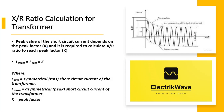Where I_symmetrical equals symmetrical RMS short circuit current of the transformer, I_asymmetrical equals asymmetrical peak short circuit current of the transformer, and Kea equals peak factor.